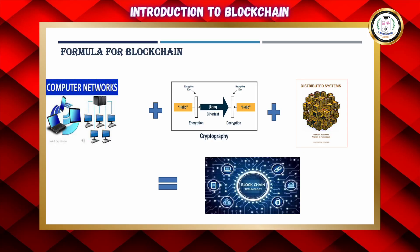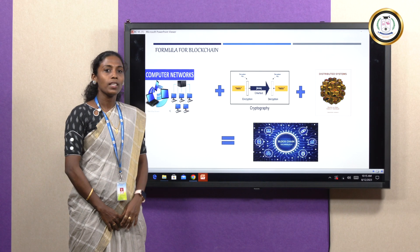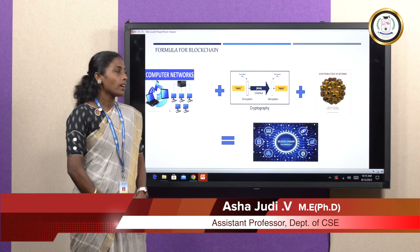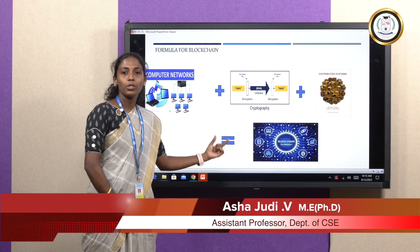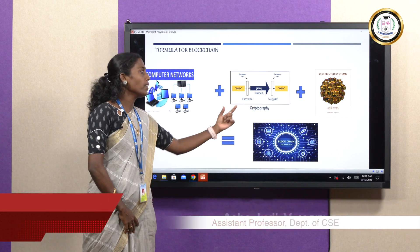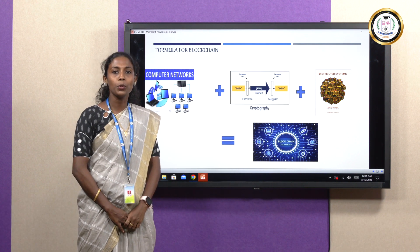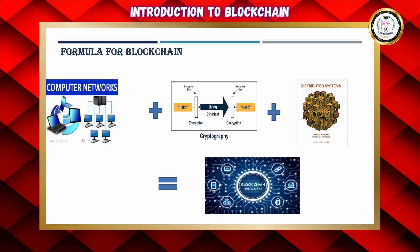When we think about Blockchain, it is built on subjects called Computer Networks, Cryptography, and Distributed Database Systems. The formula behind Blockchain is: Computer Networks plus Cryptography plus Distributed Systems, which gives the new technology called Blockchain.